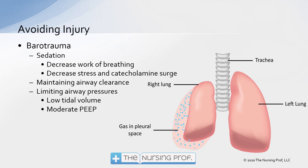Maintaining airway clearance by suctioning when appropriate will also help decrease pressure in the thorax and reduce the chance of barotrauma. Limiting airway pressures by using a low tidal volume strategy — typically five to six milliliters per kilogram — is recommended. Using moderate levels of PEEP, generally between five and 12 centimeters of water, helps maintain oxygenation. For patients who have ARDS, we may use higher levels of PEEP, perhaps in the higher teens up to about 20 centimeters of water. However, we have to be careful not to cause barotrauma. The picture here shows a patient who has a pneumothorax — air that has gotten into the pleural space as a result of high pressures puncturing the lung.